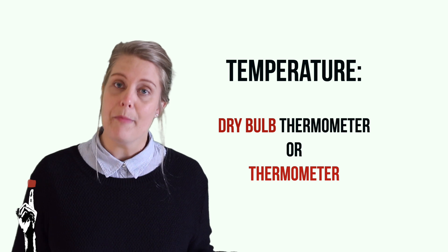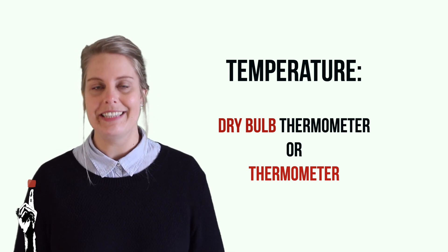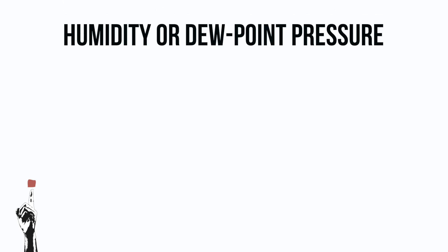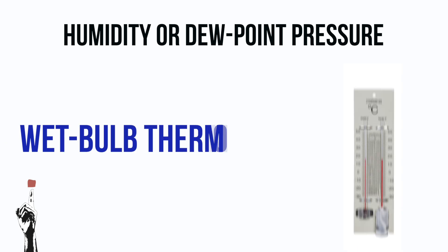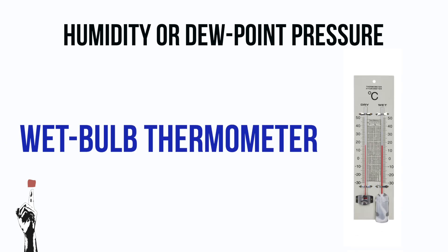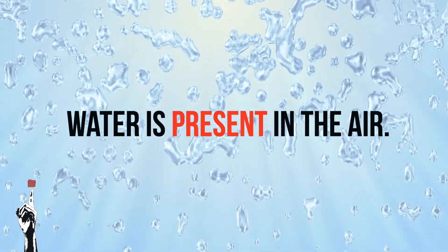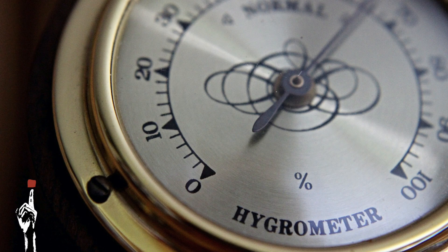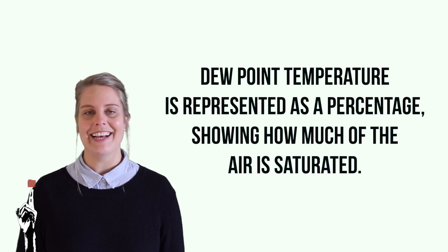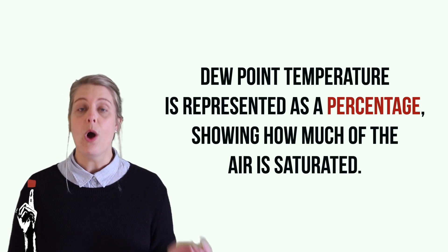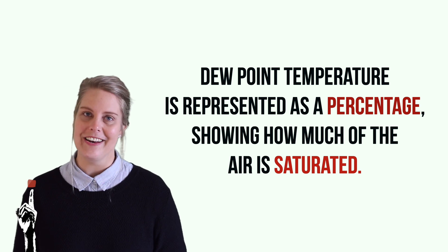The actual air temperature is measured using a dry bulb thermometer, whereas humidity or dew point temperature is measured using a wet bulb thermometer. This shows how much water is present in the air. Another instrument used to measure this is called a hygrometer. Dew point temperature is represented as a percentage showing how much of the air is saturated.